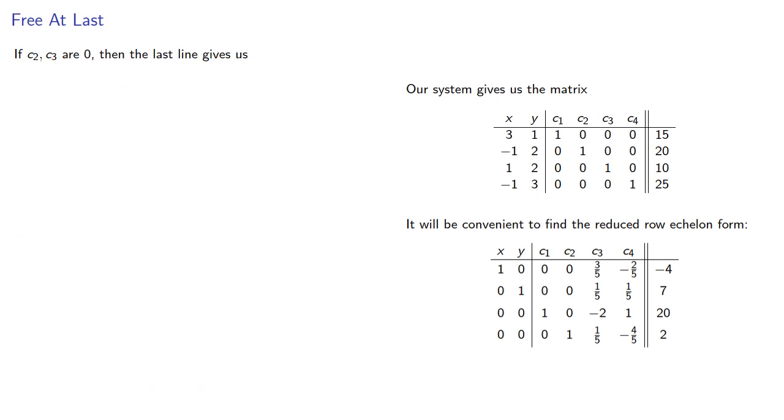If c2 and c3 are zero, then the last line gives us, which gives us a negative value for a slack variable, so the corresponding point will violate one of the inequalities. The fourth one, in fact.